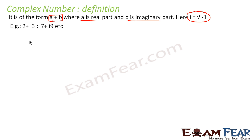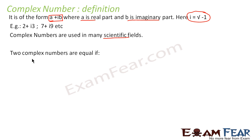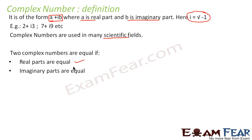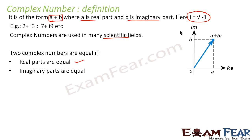Complex numbers are used in scientific fields. If you want to represent a complex number in the x-y coordinate system, you can represent it with a on the x-axis and b on the y-axis to get a plus bi.